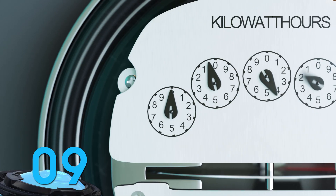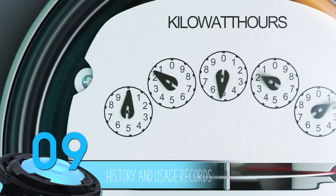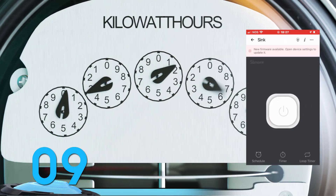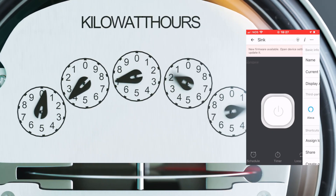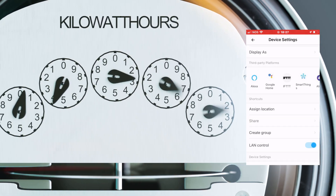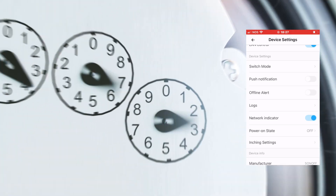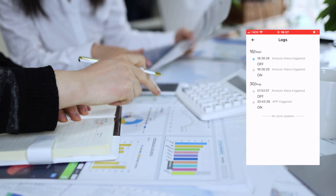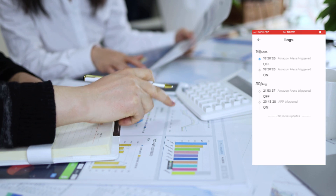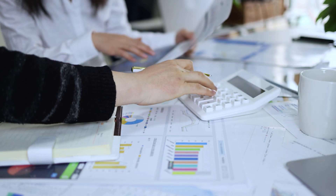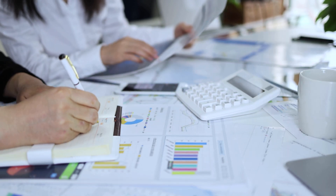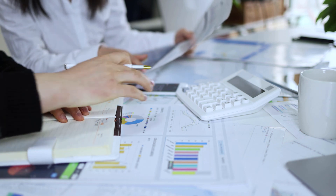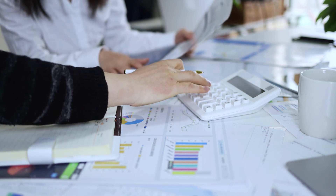Number 9: History and usage records. eWiLink offers valuable historical usage data and logs for specific devices. This feature enables you to monitor energy consumption and device activity over time, empowering you to make informed decisions about how to optimize your smart home for efficiency and convenience.